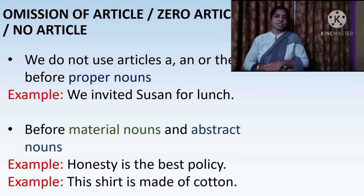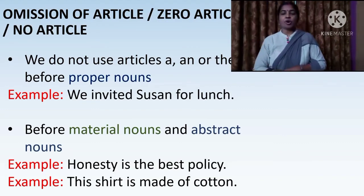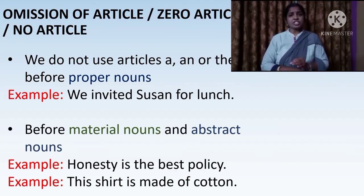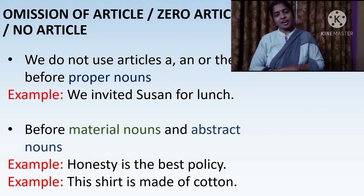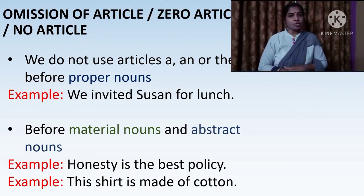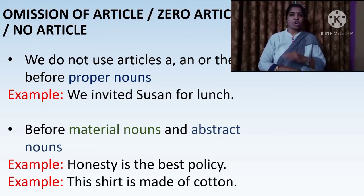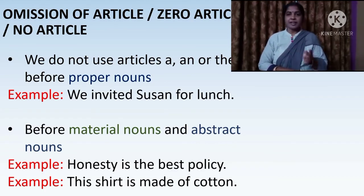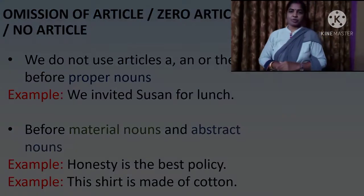We don't use any article before abstract nouns or material nouns. For example: honesty is the best policy. Honesty is the abstract noun, so we are not going to use any article before it. This shirt is made of cotton. Cotton is the material noun, and we are not using any article before the word cotton.